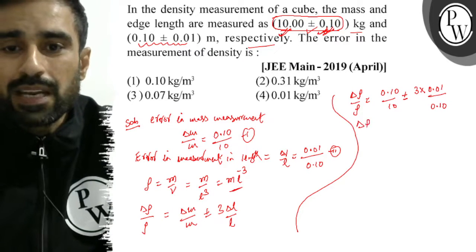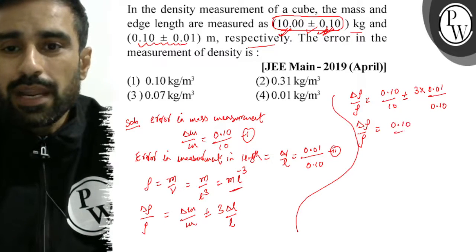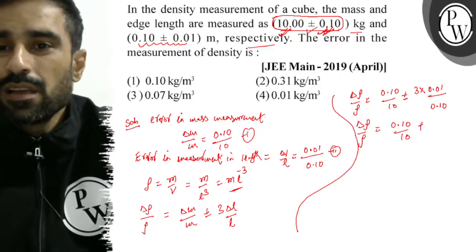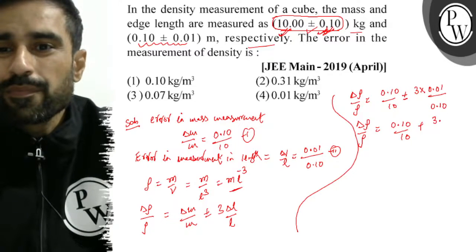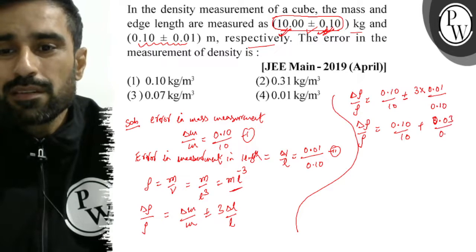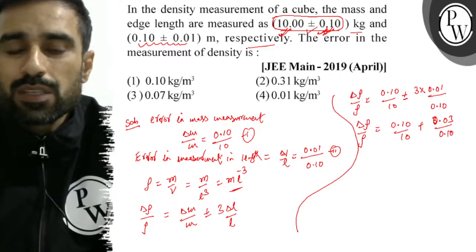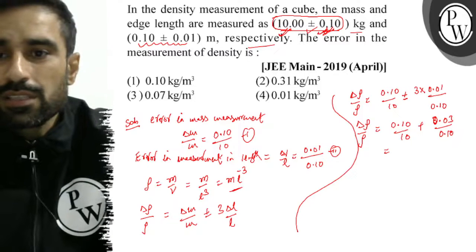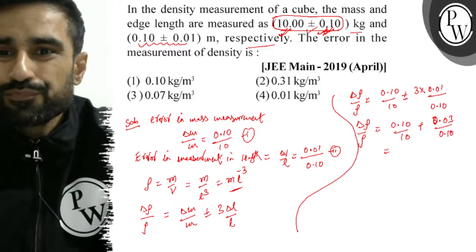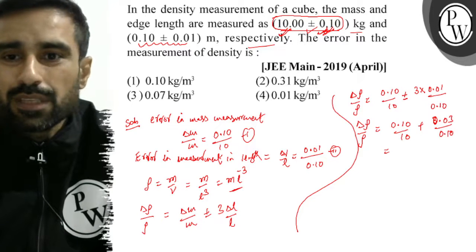Now, for maximum percentage error we don't take plus minus. This is 0.10 by 10 plus 0.03 divided by 0.10. If you solve this, this will come as 0.31.